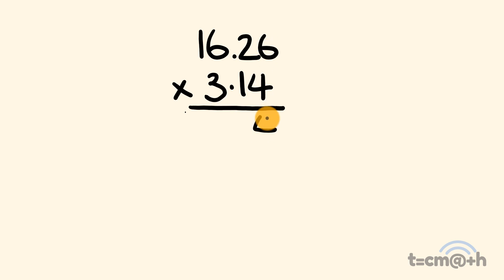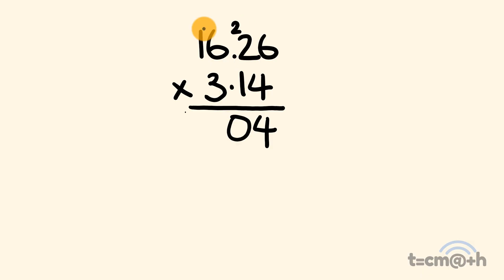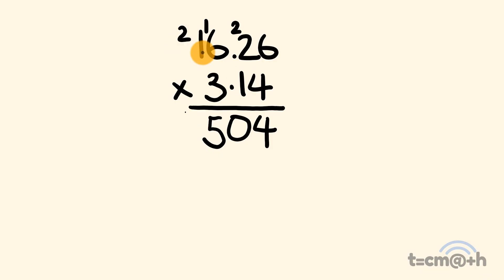Six fours are 24 — put the 4 there and carry the 2. 2 times 4 is equal to 8, plus 2 is equal to 10 — 0 there, 1 there. Six fours are 24, plus 1 is 25 — put the 5 down and carry the 2. And 1 times 4 is equal to 4, plus 2 is equal to 6.